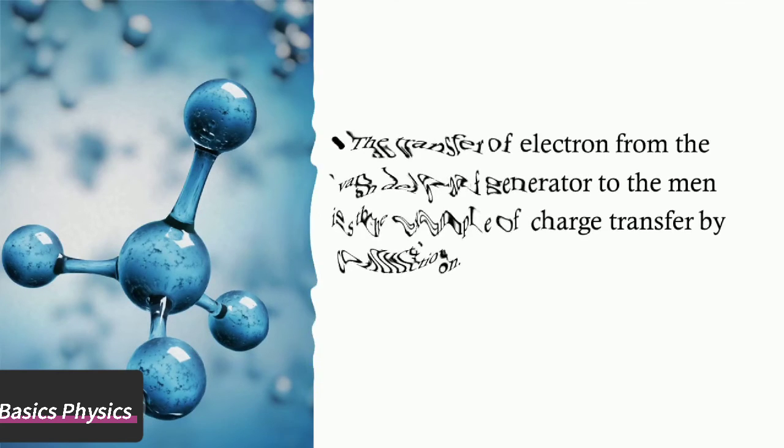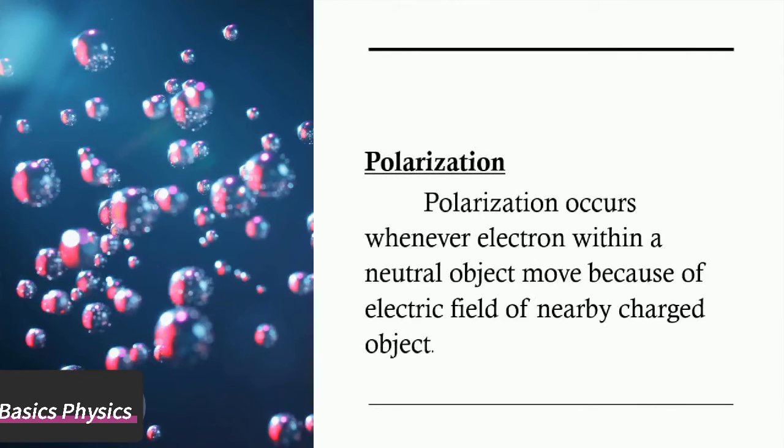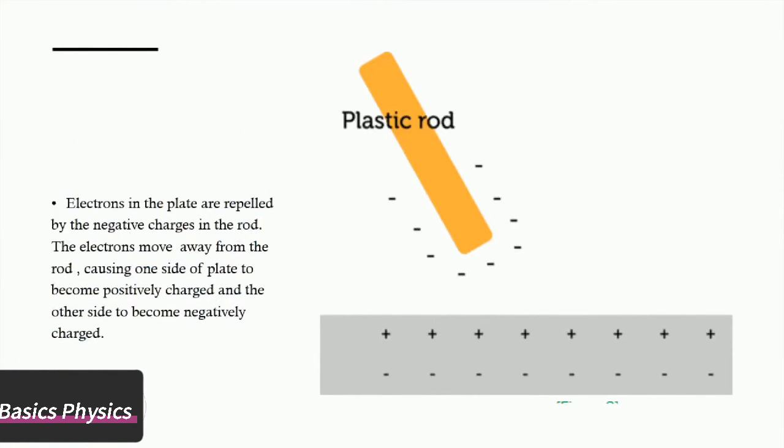Polarization occurs whenever electrons within a neutral object move because of the electric field of a nearby charged object. Electrons in the plate are repelled by the negative charges in the rod. The electrons move away from the rod, causing one side of the plate to become positively charged and the other side to become negatively charged.